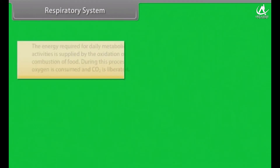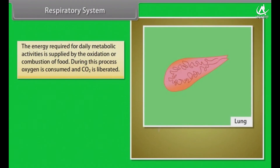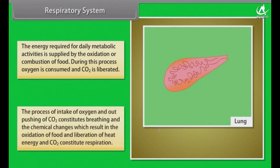Respiratory system. The energy required for daily metabolic activities is supplied by the oxidation or combustion of food. During this process, oxygen is consumed and CO2 is liberated. The process of intake of oxygen and out-pushing of CO2 constitutes breathing, and the chemical changes which result in the oxidation of food and liberation of heat energy and CO2 constitute respiration.